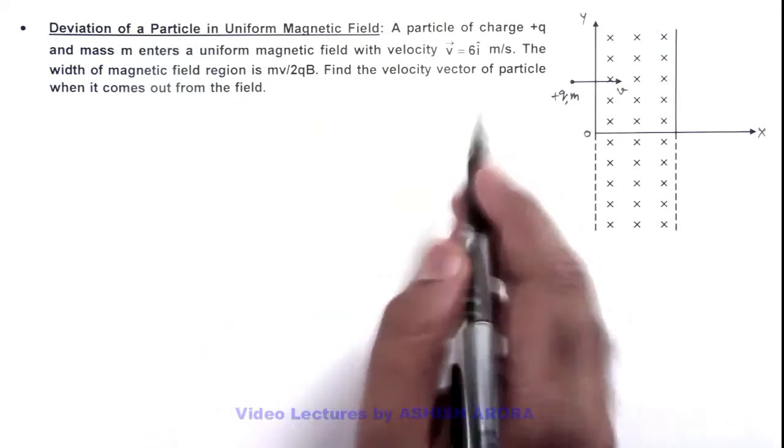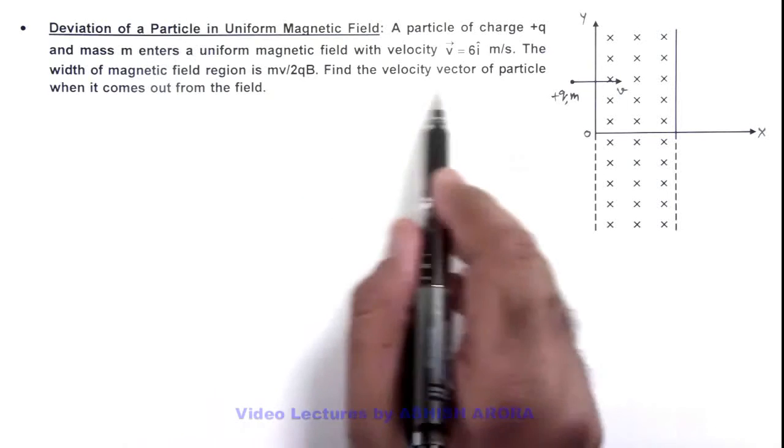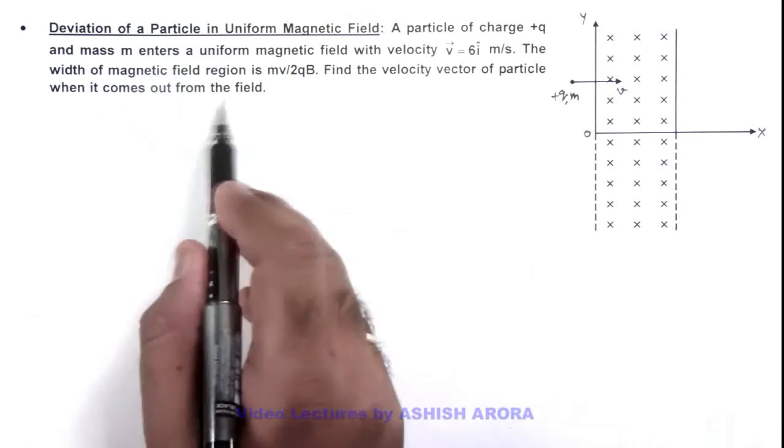Because circular radius is mv/qB for any charge entering the magnetic field. We are required to find the velocity vector of the particle when it comes out of the field.